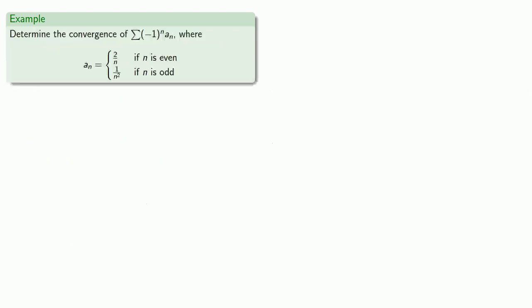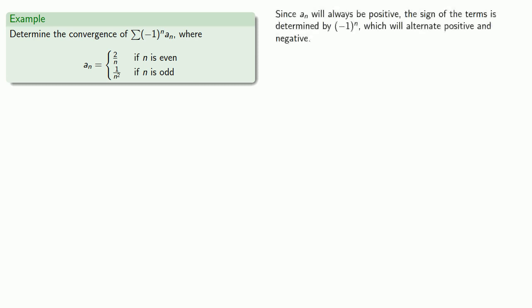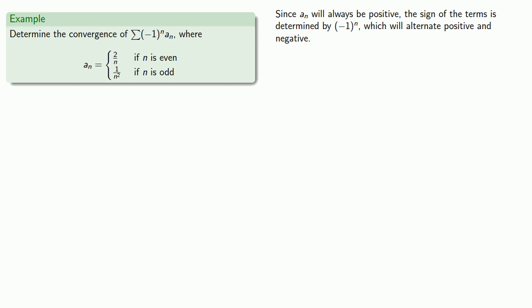Let's take a look at a different series. This one is (-1)^n times a_n, where a_n has different expressions depending on whether n is even or odd. However, a_n will always be positive, so the sign of the terms is determined by (-1)^n, which alternates between positive and negative. So we have an alternating series and we can apply the alternating series test.